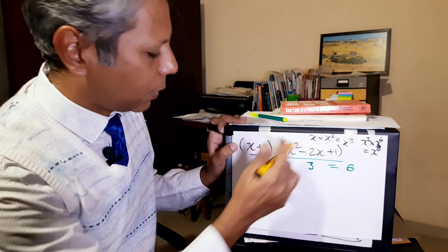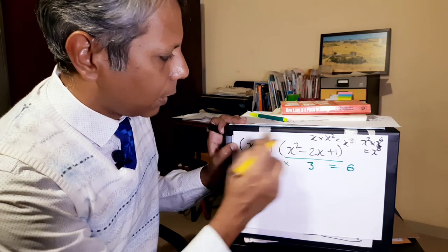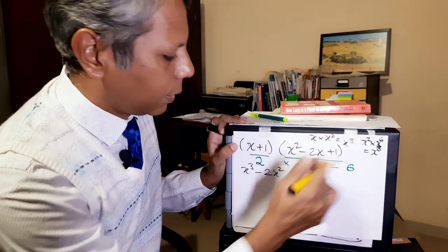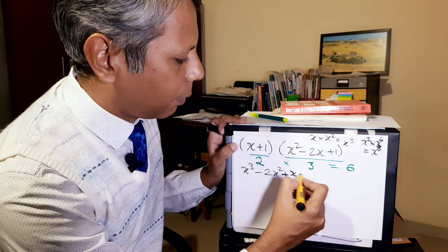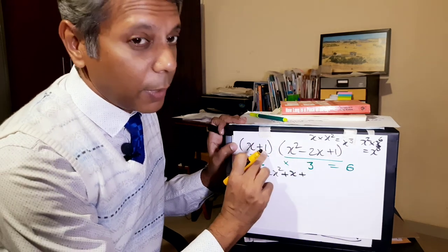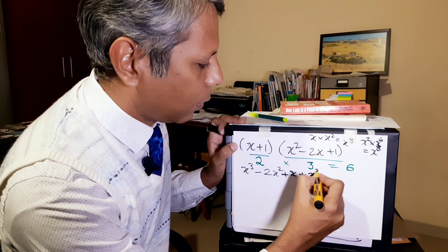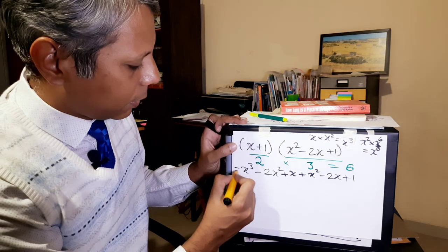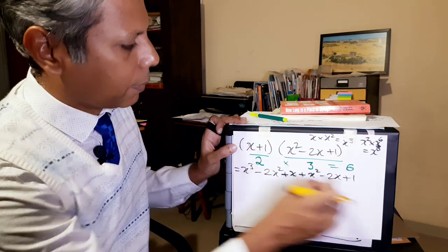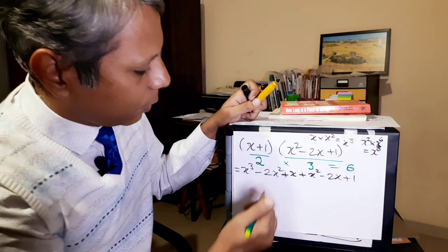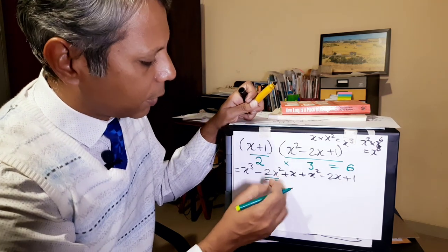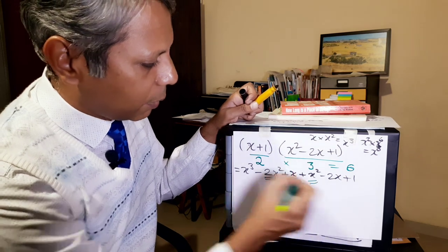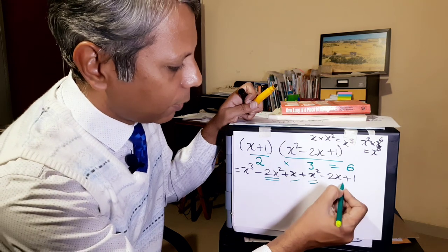So anyway, let's do this. x into x squared is x cubed, x into minus 2x is minus 2x squared, x into 1 is x, plus just this, because in this case we are multiplying with 1. So plus x squared minus 2x plus 1. We can see that we have 2 x squared terms and an x here and minus 2x there, so we have like terms.